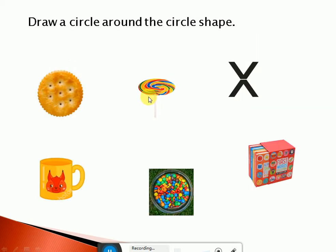Now look at many pictures here. Some pictures are in circle shape and some are not in circle shape. Children, we will draw a circle around the circle shape pictures. Now look at this picture — this is the first picture, a biscuit. Is it in a circle shape? Yes! It is in a circle shape. Let's circle it. Very good!